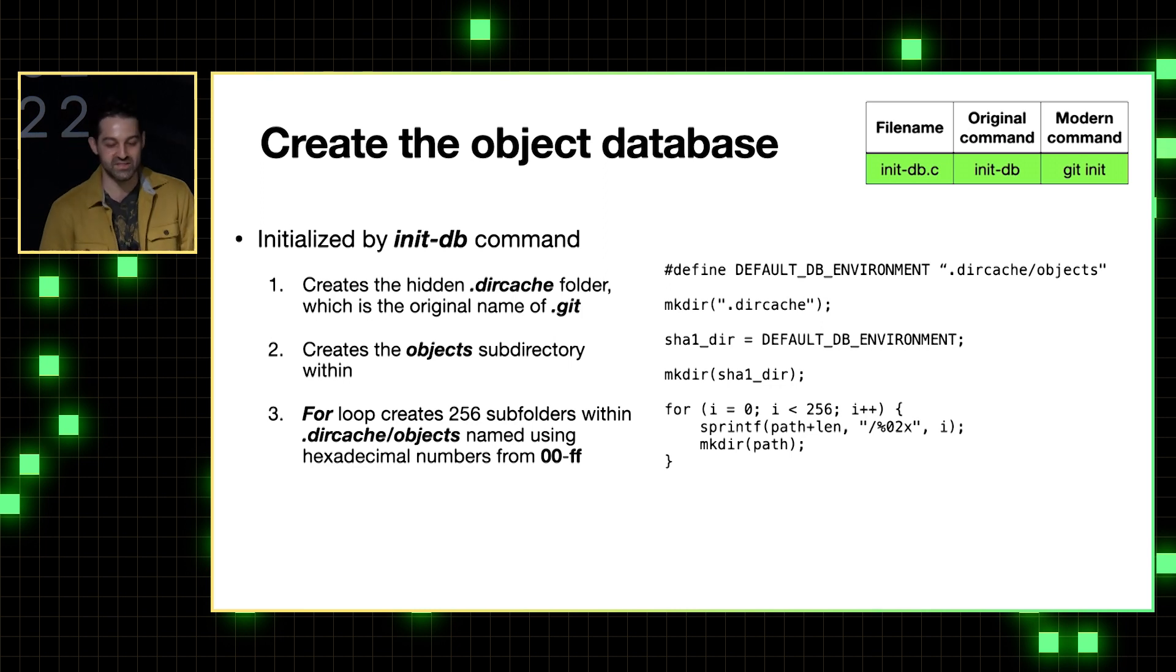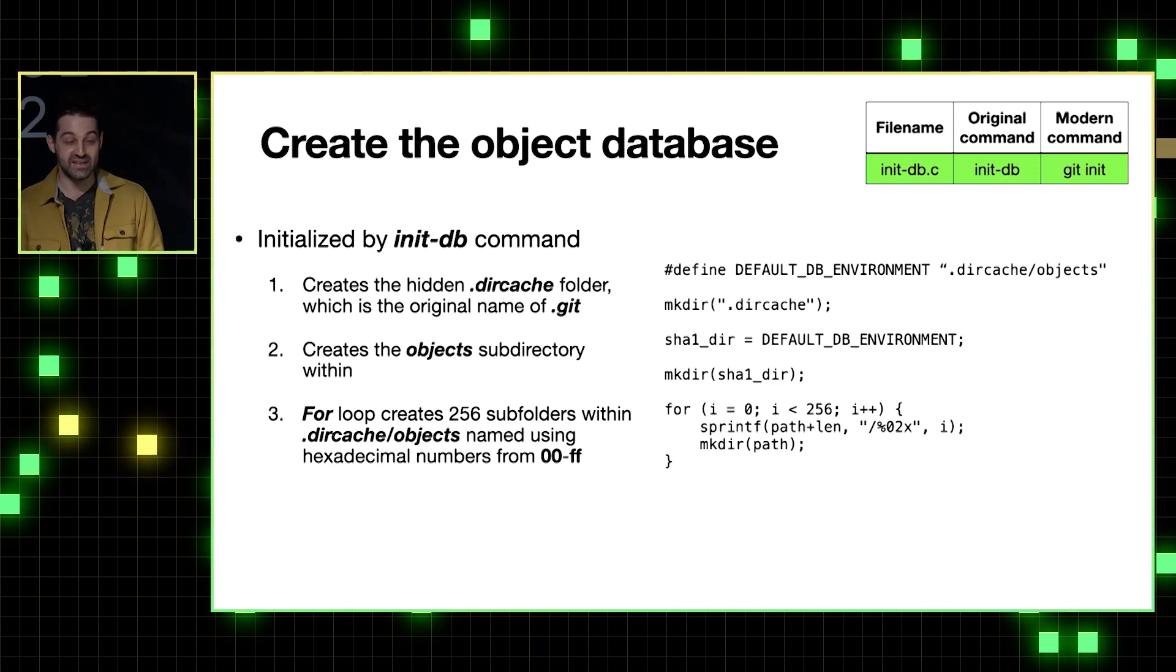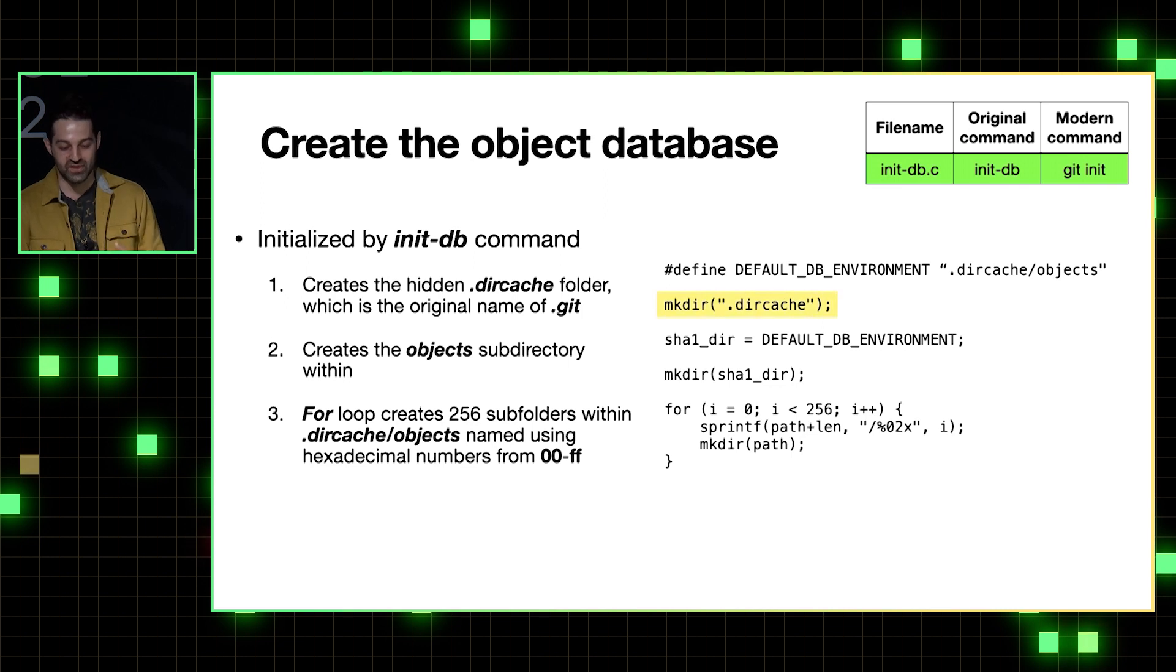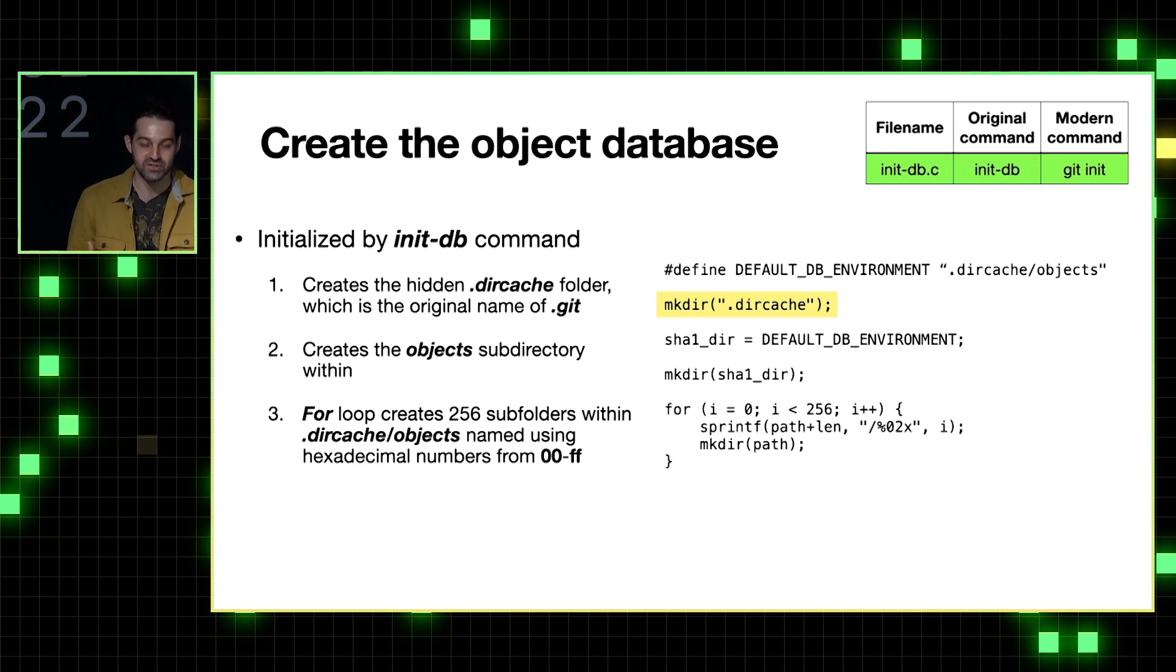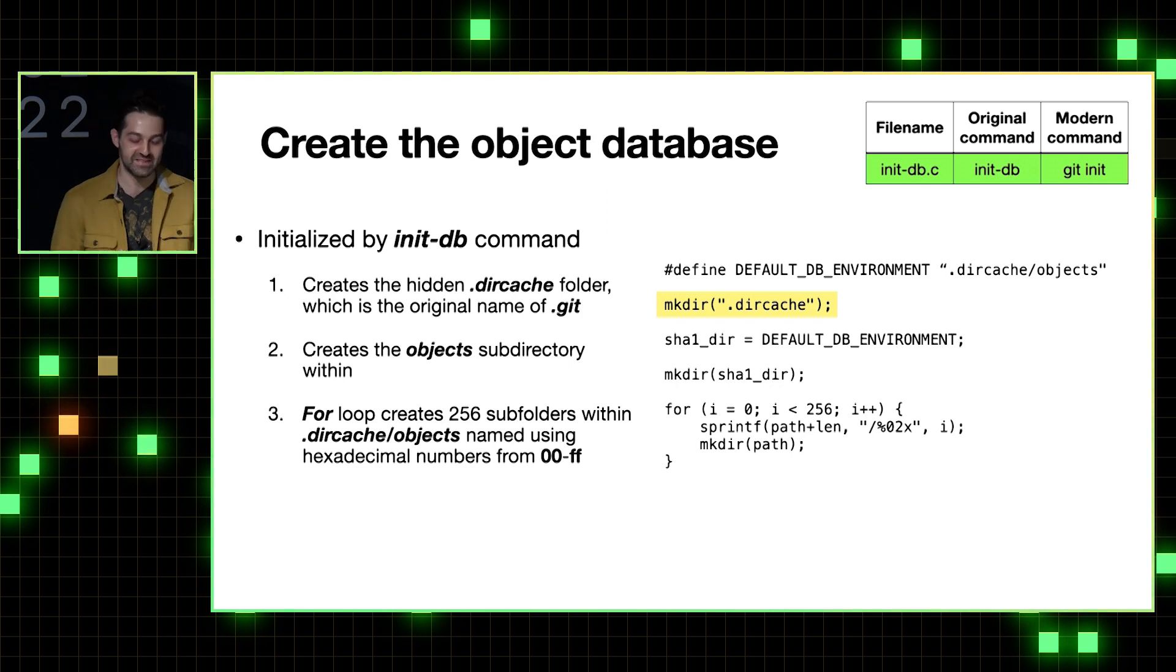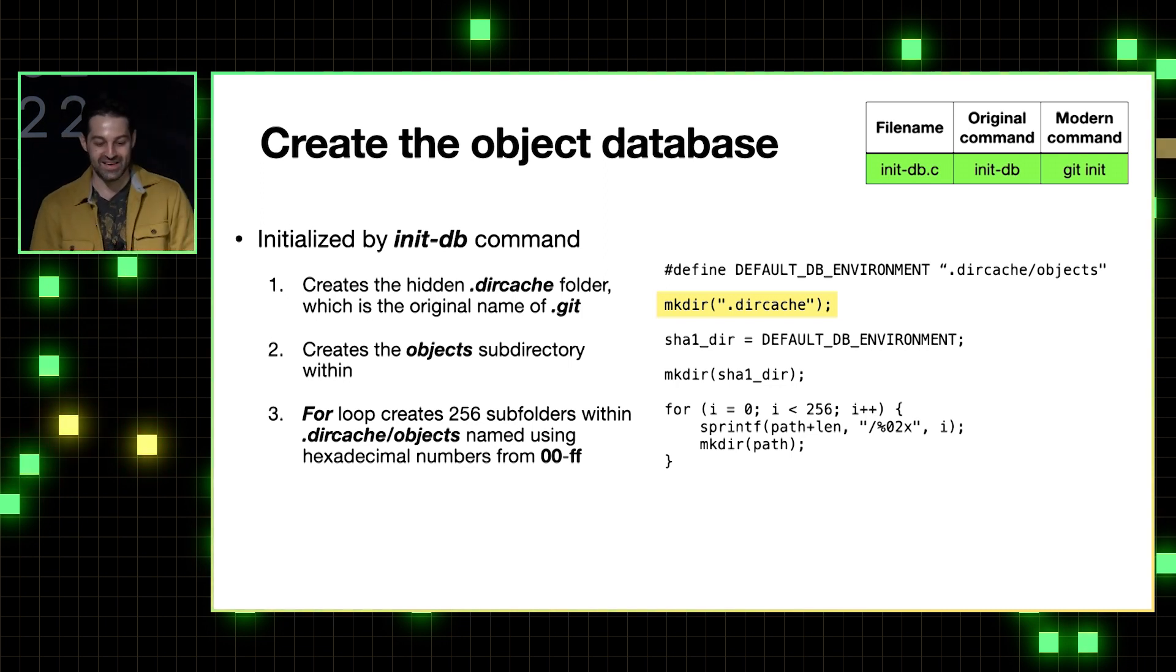All right, so now let's jump right into Git's code and see how it actually creates an object database. And it's actually ridiculously simple. So it's created when you run that initdb command, which remember is like the original git init. And the code just uses this makedir function in C to create a hidden folder called .dircache, which is just the original name of the .git folder. And kind of a fun fact about that is that if you look through the commit history, Linus was apparently planning to name this tool dircache instead of git until he mentioned in a commit message in very Linus style that that idea was clearly moronic and he changed the name to git at that time.